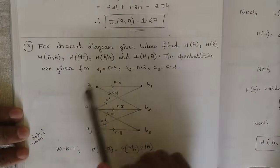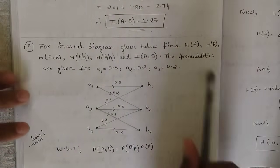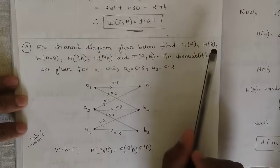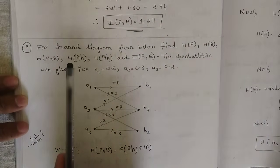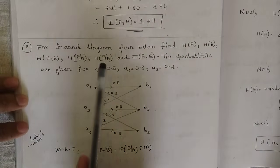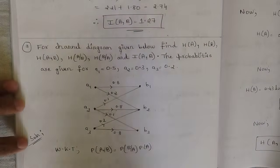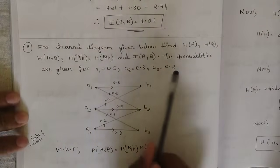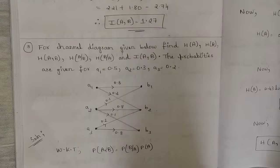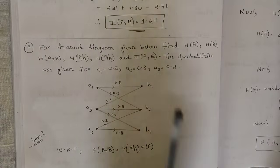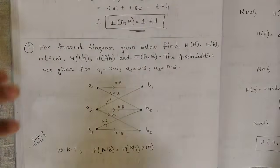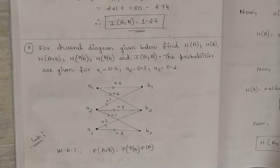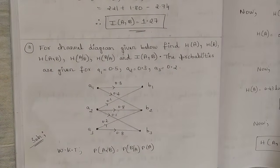The question goes like this: for the channel diagram given below, find the values of H(A), H(B), H(A,B), H(A|B), H(B|A), and the mutual information I(A,B). The probabilities are given for A1, A2, and A3 — P(A1), P(A2), P(A3) are already given, and based on the channel diagram you need to write the channel matrix.